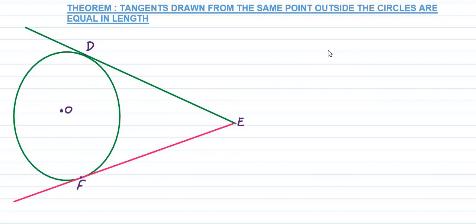Tangents drawn from the same point outside the circle are equal in length. If the tangent is equal to point E outside the circle, we have to prove that DE and FE are equal.